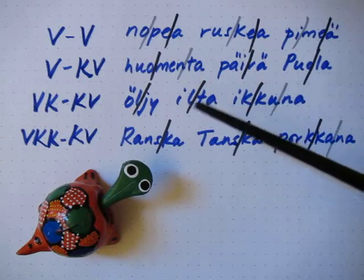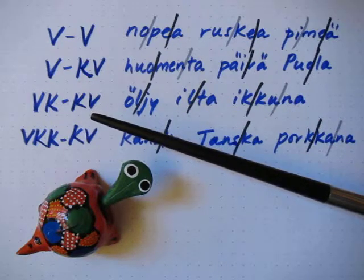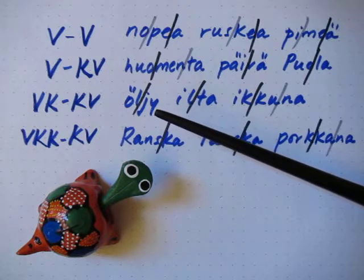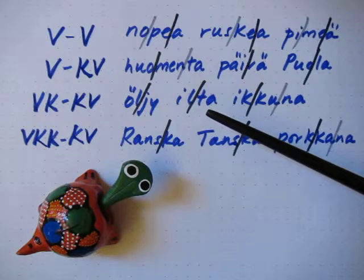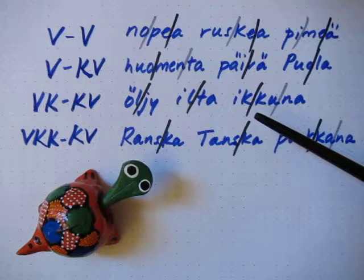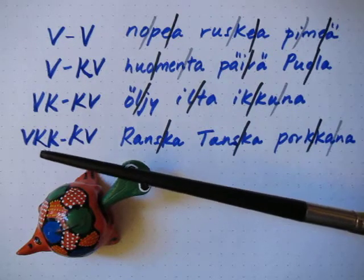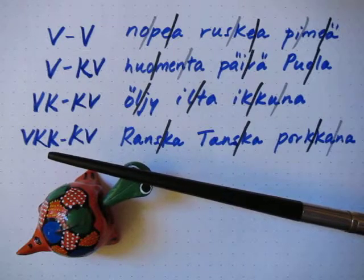We continue on to vokaali-konsonantti-konsonantti-vokaali. Example words: öljy, ilta, ikkuna.